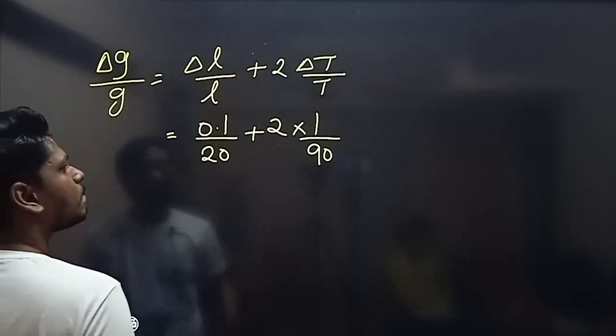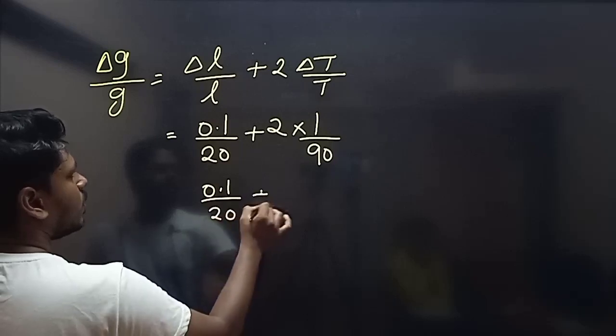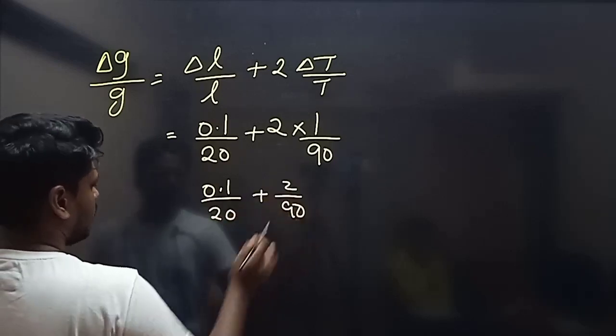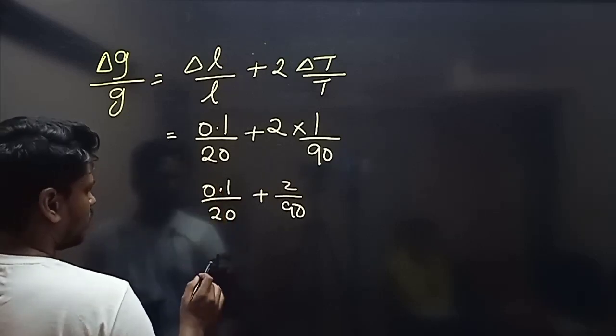So we have 0.1 by 20 plus 2 by 90. That's 0.1 by 20 which equals 0.005.